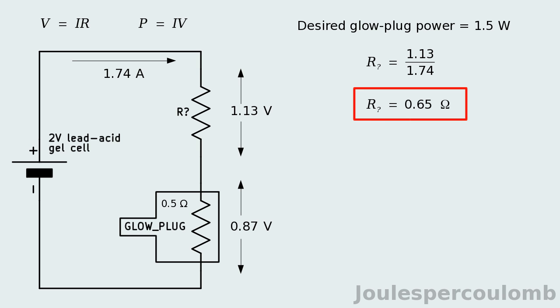It would be useful to know how much power will be dissipated by the series resistor. This can be obtained by multiplying the current through it by the voltage across it.